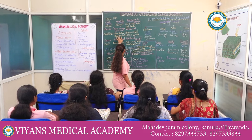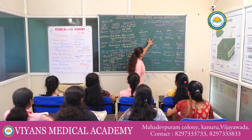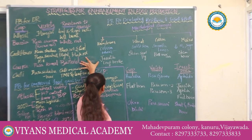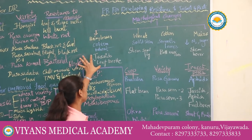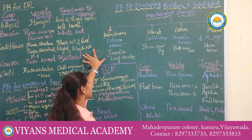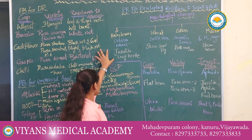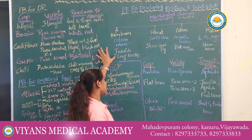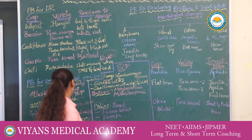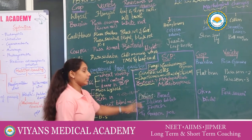Plant breeding for disease resistance and plant breeding for developing resistance against insect pests — these two tables are very important. Next, we come to plant breeding for improved food quality.